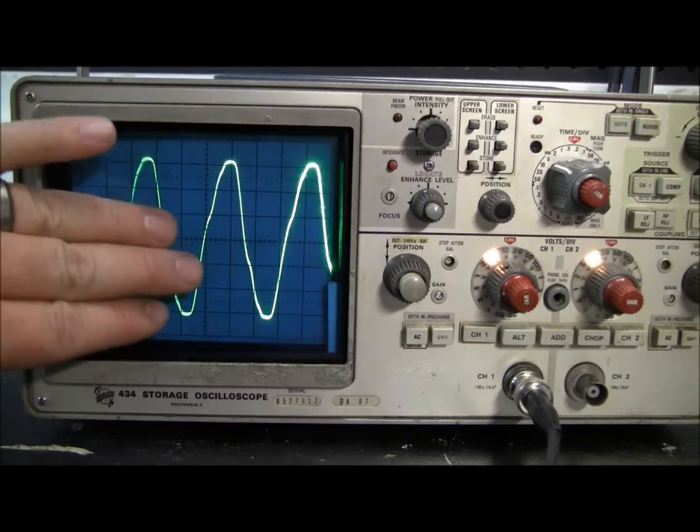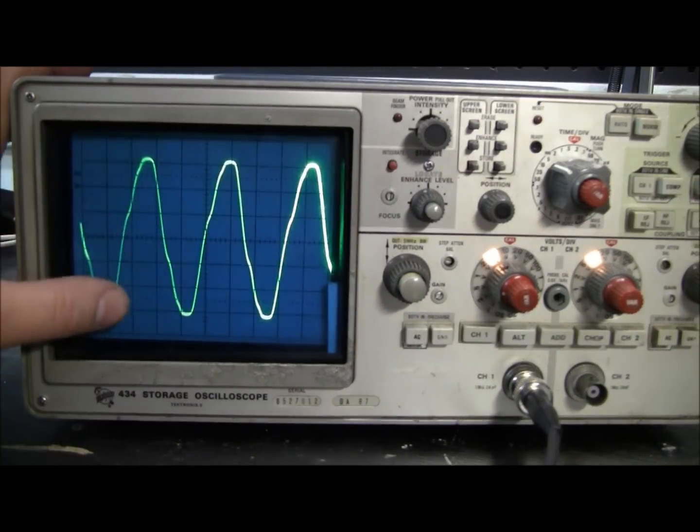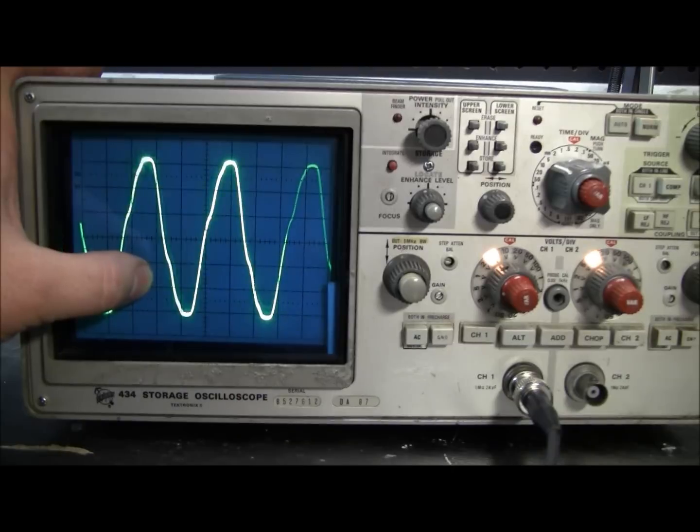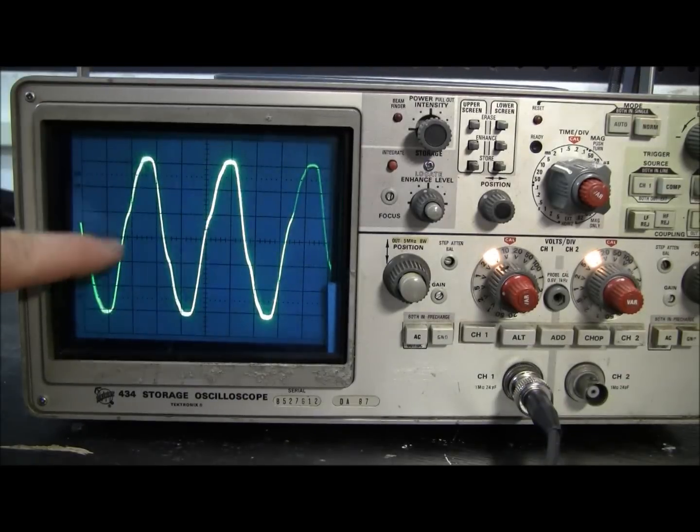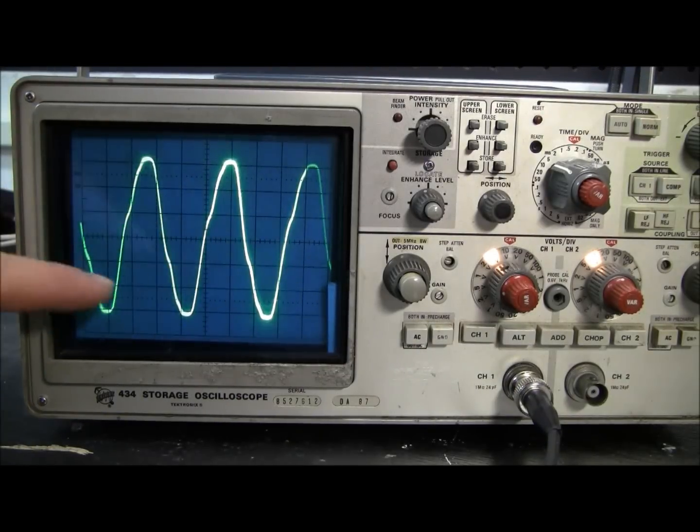This is very useful for looking at alternating current, or RF - RF would be radio frequency, say if you were building a radio, or if you had an audio circuit. This thing can see the oscillation, or the frequency.